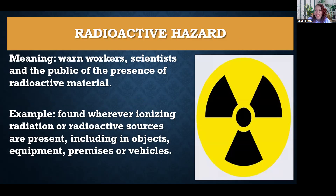This is the radioactive hazards symbol. Sometimes in the lab we do use radioactive substances, especially in clinical chemistry — for example when doing radioimmunoassays or working with radioisotopes. This sign means that those substances emit radioactive rays, which are known to cause cancer and other diseases. You find them wherever ionizing radiation or radioactive sources are present, including in objects, equipment, premises, or vehicles. So be very careful and be appropriately dressed before you enter such places.